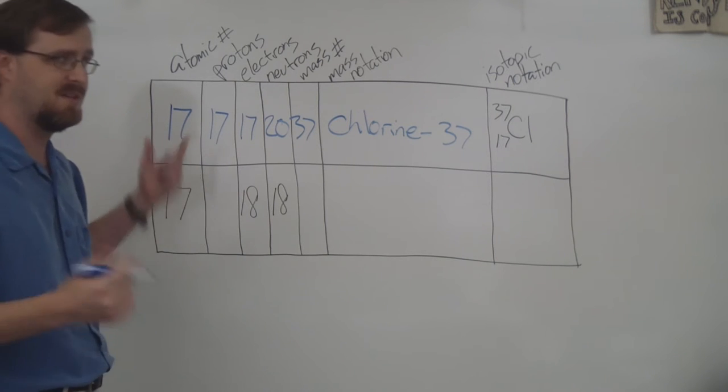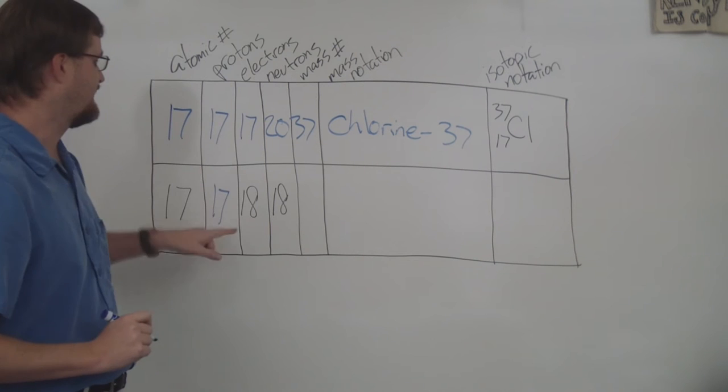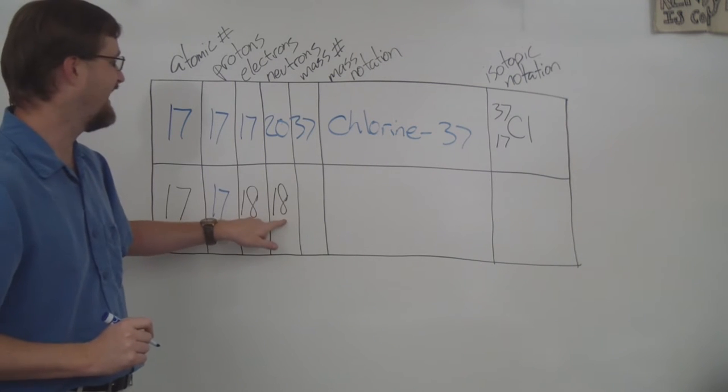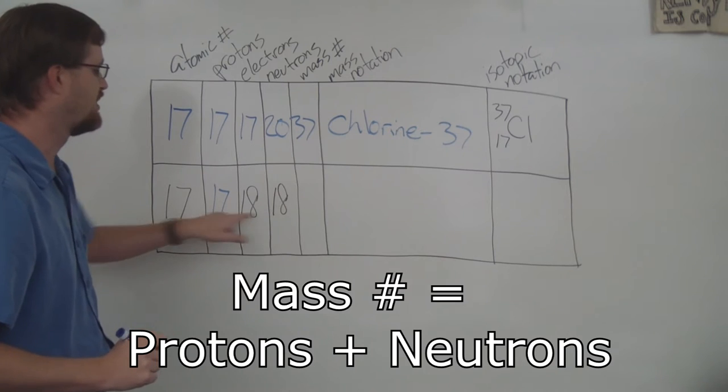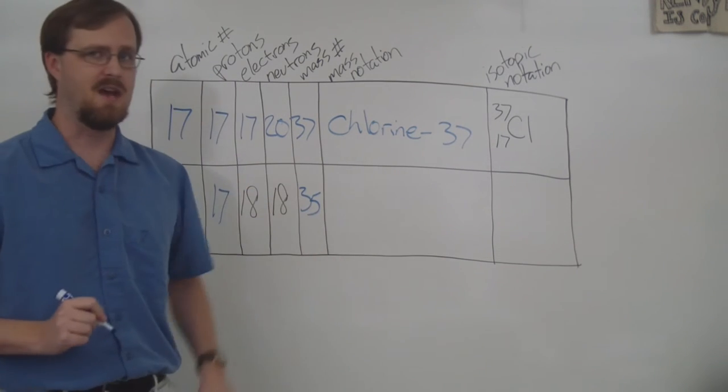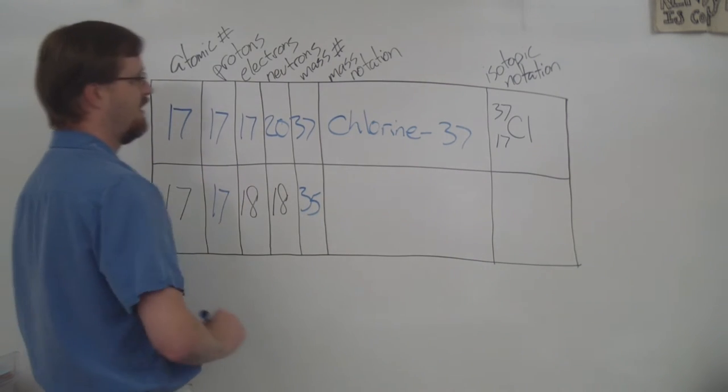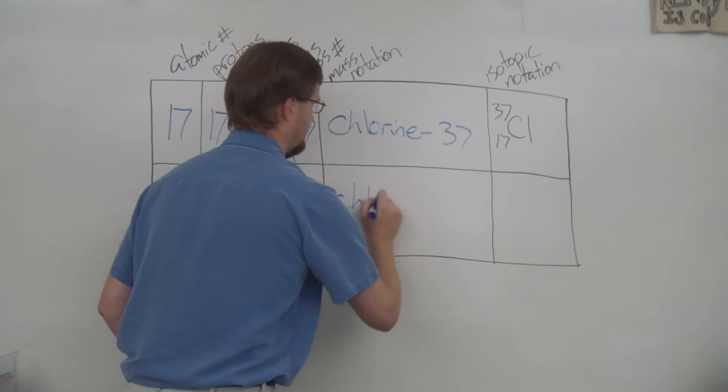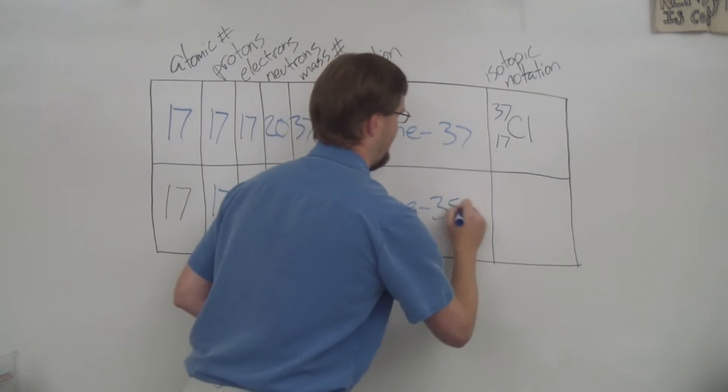Once again, the atomic number is 17, so that means our number of protons is 17, but we have 18 electrons and 18 neutrons. How do we find the mass number? We simply add the protons and the neutrons to get 35. Now for the mass notation: since it's the same number of protons, it's still chlorine, this time mass is 35.